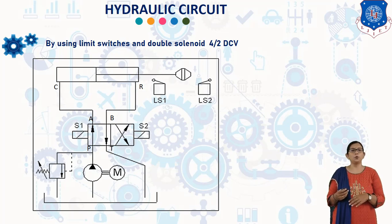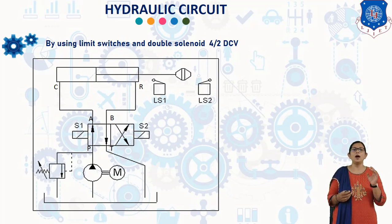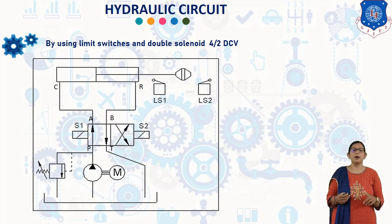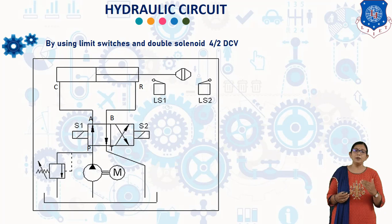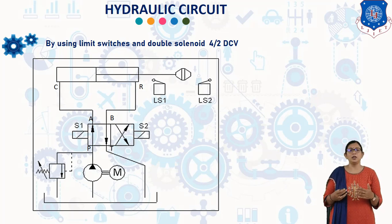In this diagram, C means cap end and R means rod end. Ls1 and Ls2 are the two limit switches. In this circuit, a 4/2 double solenoid DCV is used. There are two limit switches to operate this 4/2 DCV. When a limit switch is pressed, electric current flows to the connected solenoid valve; hence the spool of the 4/2 DCV shifts to the other position. The cylinder piston rod, while reciprocating, actuates the limit switches which in turn actuate the 4/2 DCV.